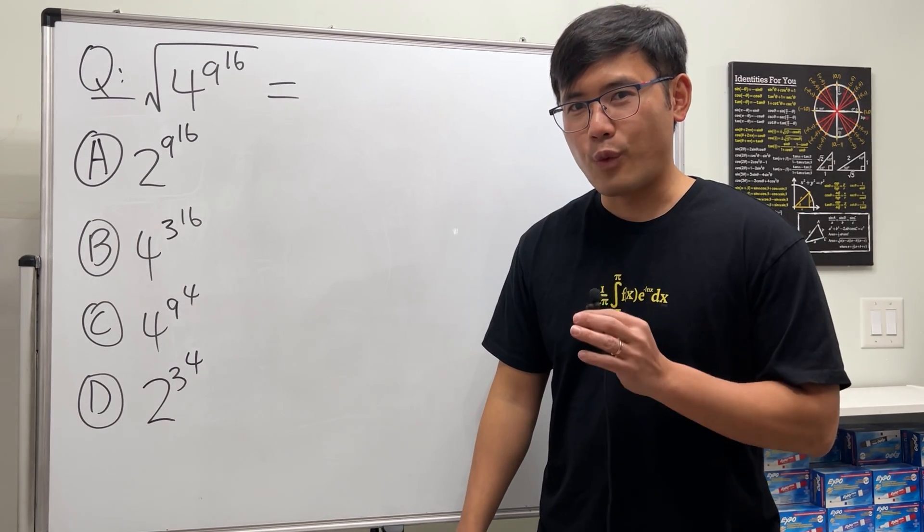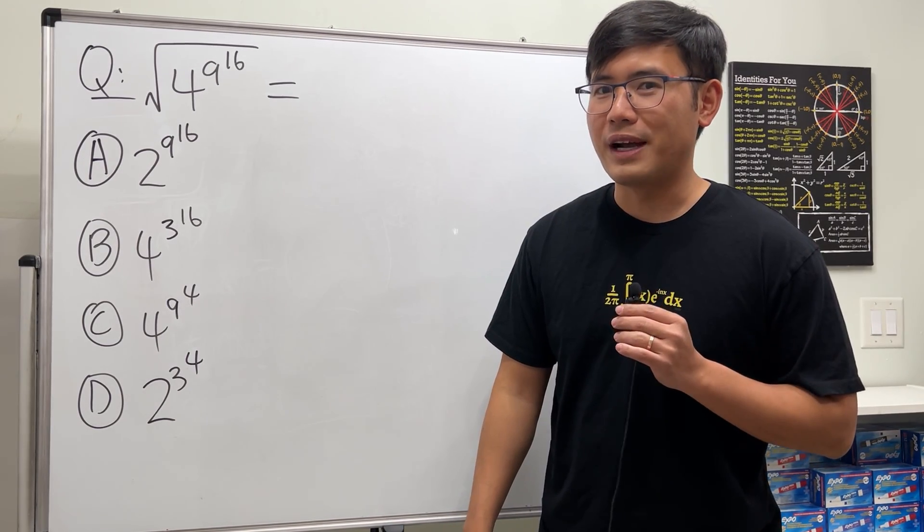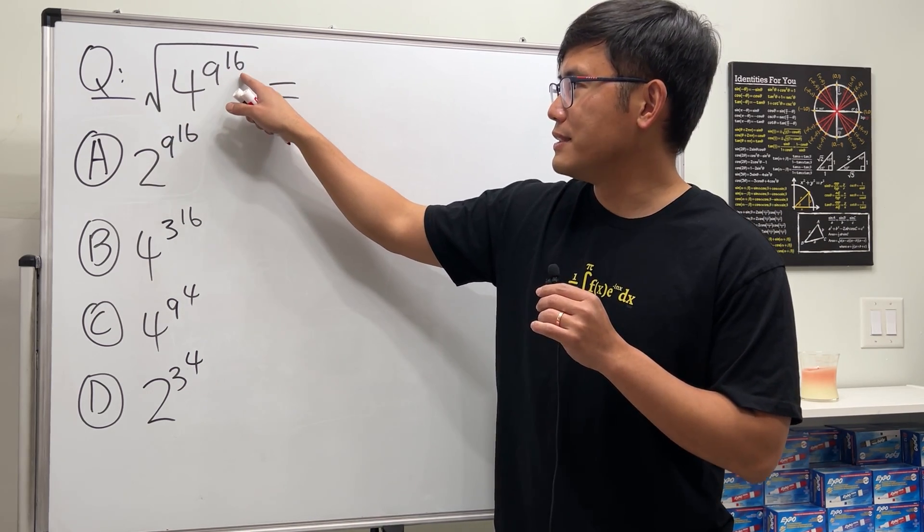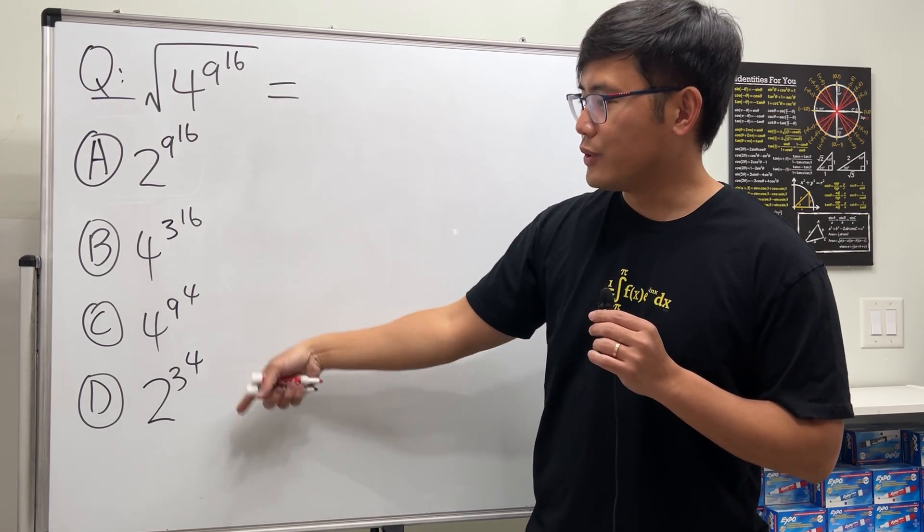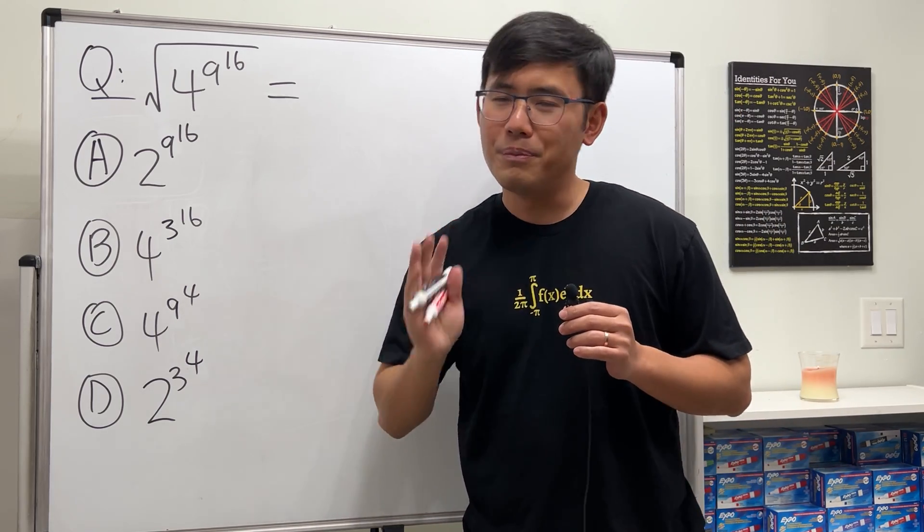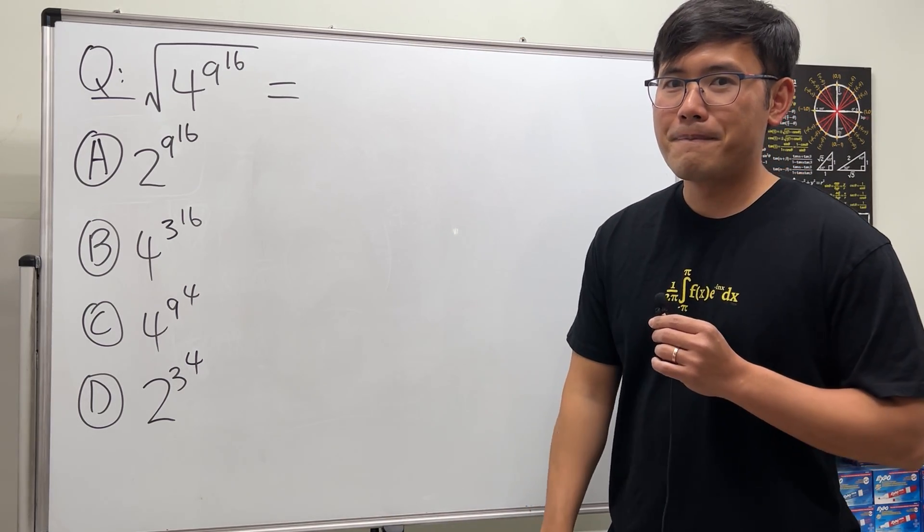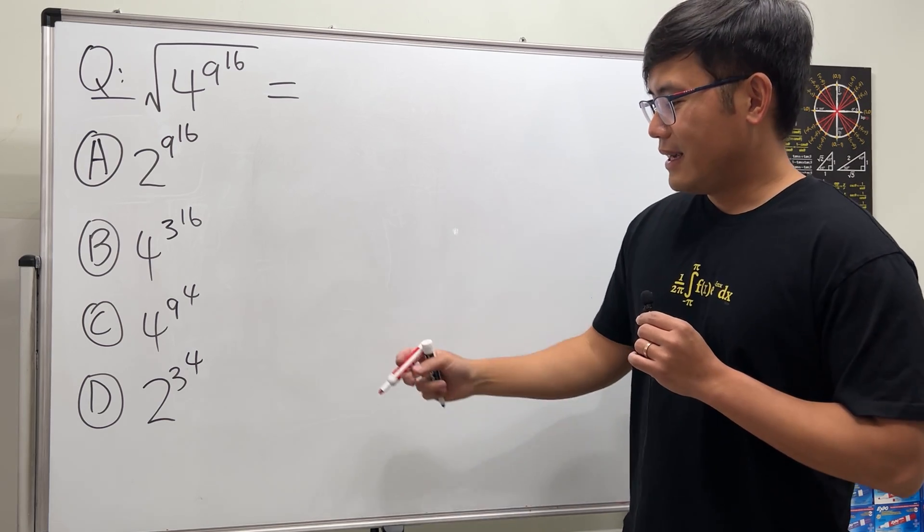Okay, I just came up with a very fun square root and exponent question for you guys. Here we are going to figure out the square root of 4 to the 9 to the 16th power is equal to which of these. You know the deal, please pause the video and try this first.